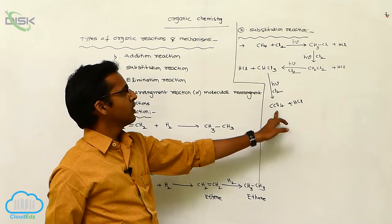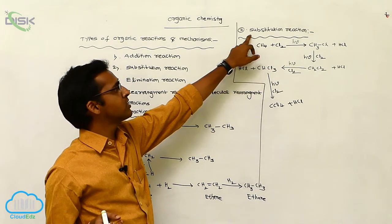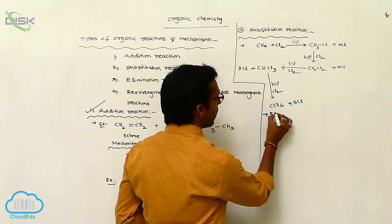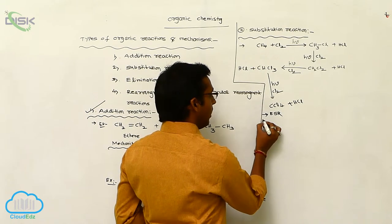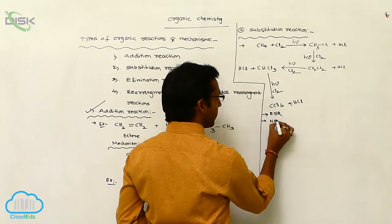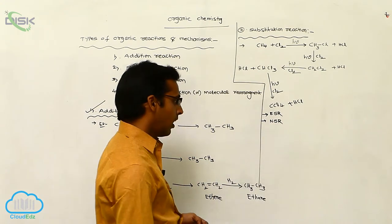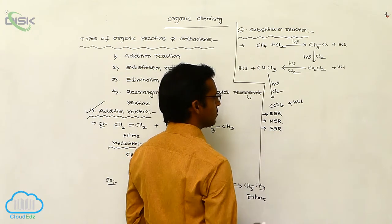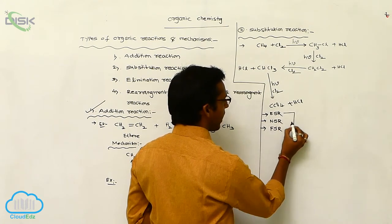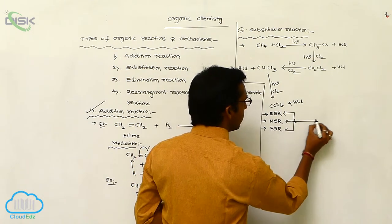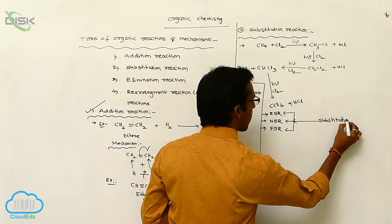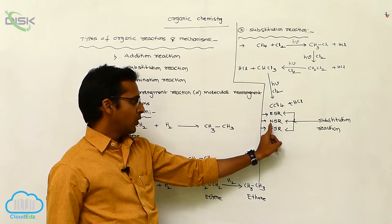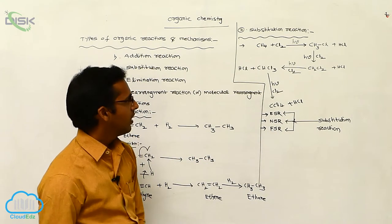All alkanes participate in substitution reactions. Based on the initiating species, substitution reactions are classified into three types: electrophilic substitution reaction (ESR) — initiated by an electrophile; nucleophilic substitution reaction (NSR) — initiated by a nucleophile; and free radical substitution reaction (FSR) — initiated by a free radical.